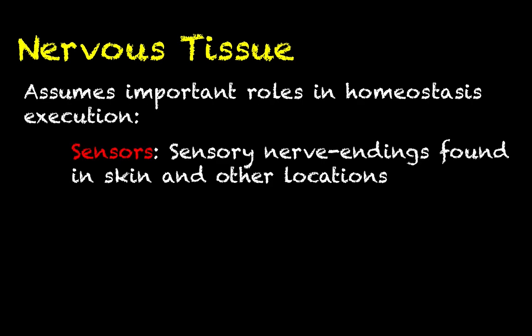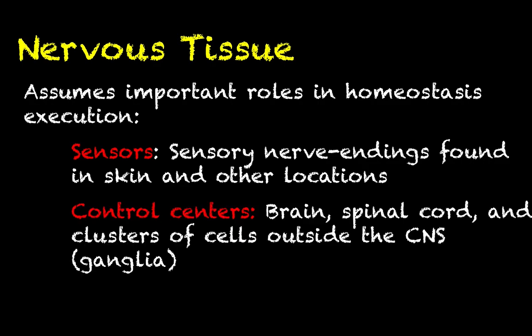Nervous tissue serves important roles as sensors. Specifically, a lot of sensors are the nerve endings of sensory neurons, and these nerve endings tend to be found in the skin and embedded in other locations in the body. They tend to be positioned in places that allow them to detect specific stimuli, whether it's changes in temperature, physical stimuli, or pressure stimuli. We'll see lots of examples of that as we go throughout the semester.